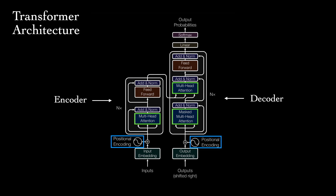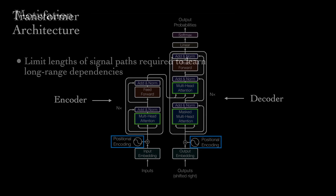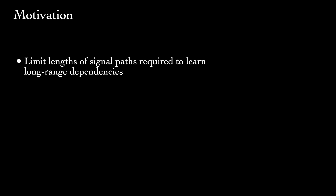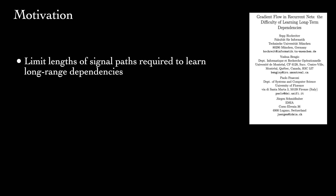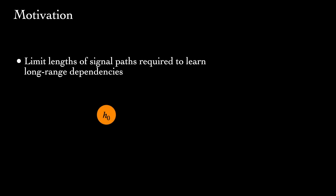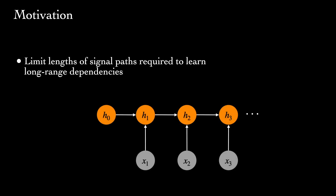Before we dive into the architecture, let's take a second to understand why the authors developed the transformer. One motivation is that we want to limit the lengths of paths that signals must traverse when learning long-range dependencies. Maybe our model is summarizing a long document, and the meaning of a certain word depends on something encountered several sentences prior. A recurrent model, like a standard RNN that processes words sequentially, has path lengths that grow linearly in the distance between two positions of interest. In contrast, with a transformer, path lengths will always be constant, regardless of the distance.